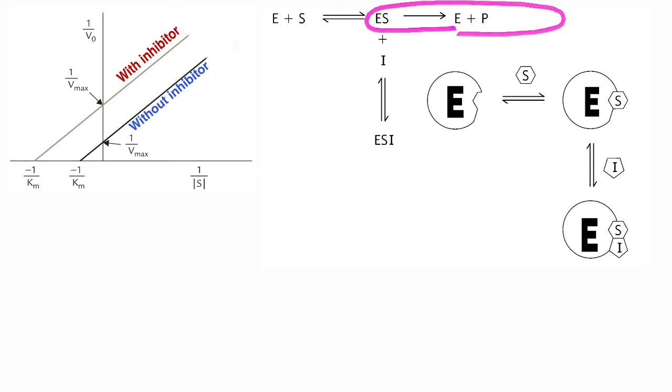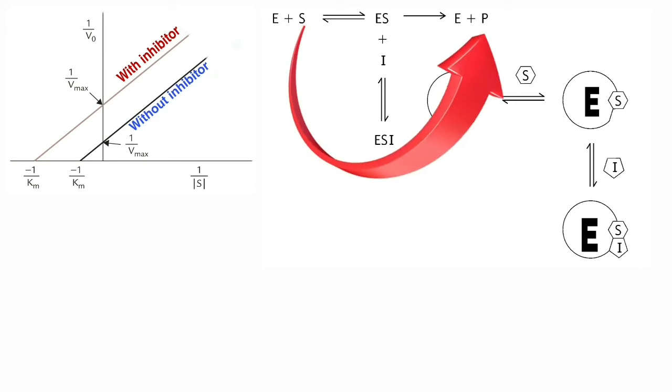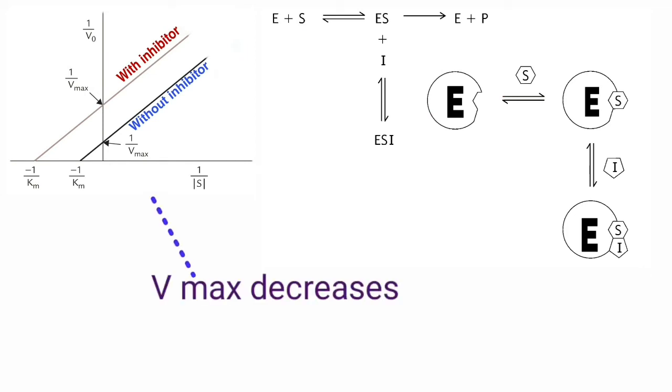Whenever the active enzyme concentration decreases, it affects the conversion of substrates into products. In simple terms, whenever the availability of functionally active enzymes decreases, the velocity maximum also decreases.